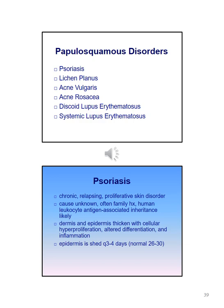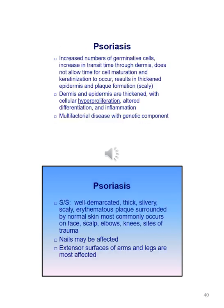Psoriasis affects the dermis and the epidermis, which is usually thickened with cellular hyperproliferation, altered differentiation, and inflammation. The epidermis is shed every three to four days. In psoriasis there is an increased number of germinated cells and an increase in transit time through the dermis, which does not allow time for cells to mature and keratinization to occur, resulting in thickened epidermis and plaque formation.